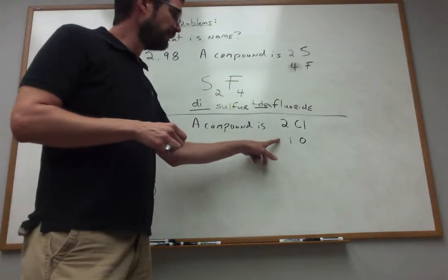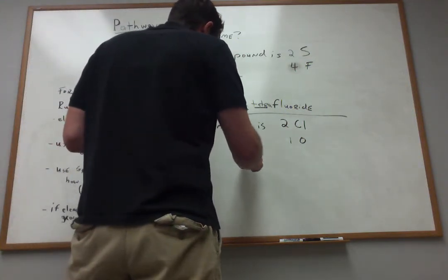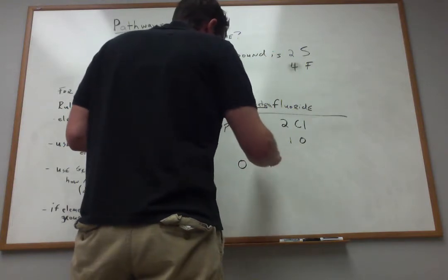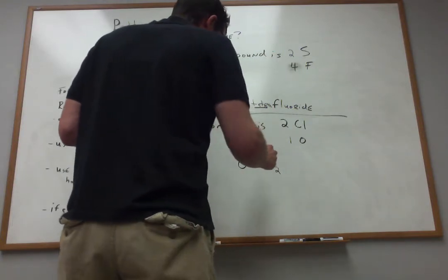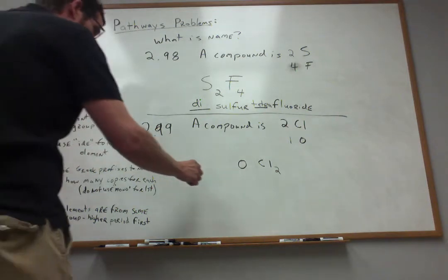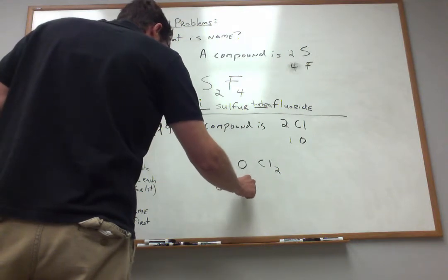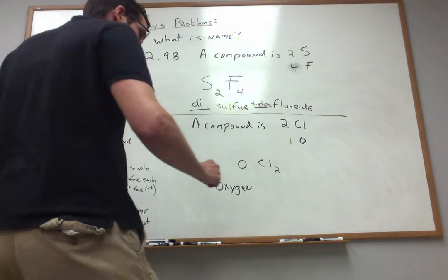So because the oxygen has the lower group number, we're going to write that one first, and then we'll write the chlorine. So OCl2 would be the chemical formula for this stuff. But we want the name. So because the oxygen was first, I'll start with that.